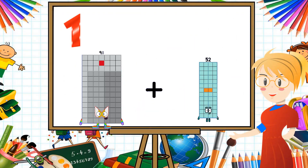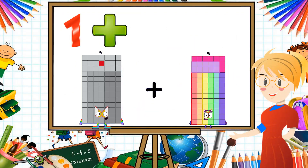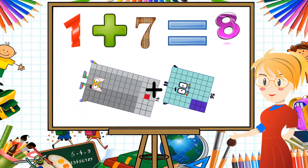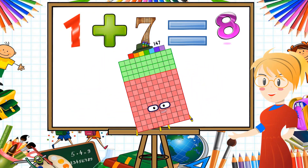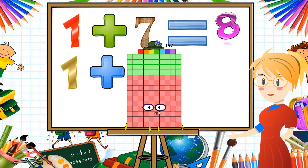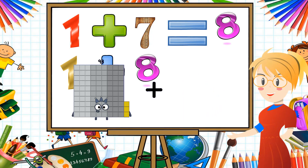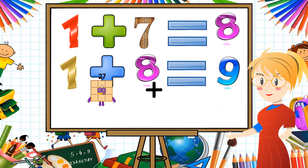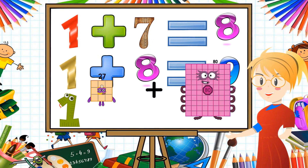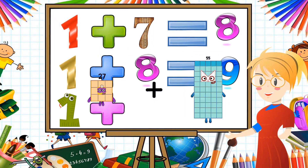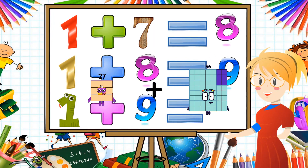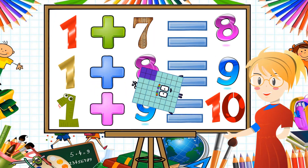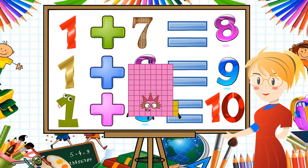91 plus 56 equals 147. 27 plus 56 equals 83. 32 plus 43 equals 75.